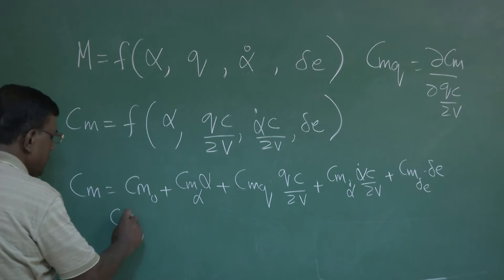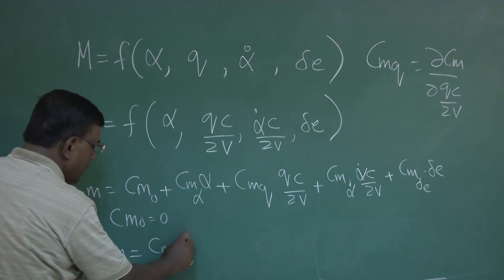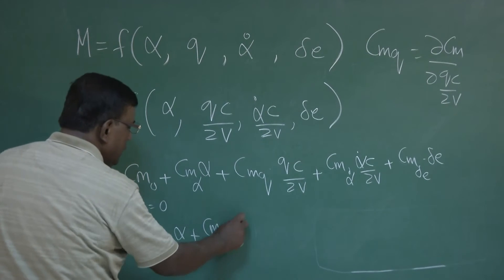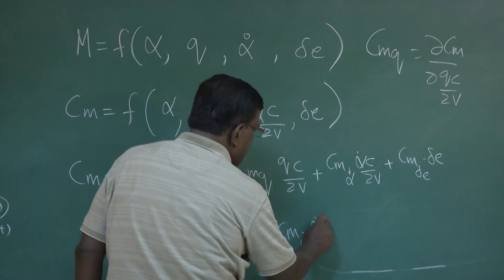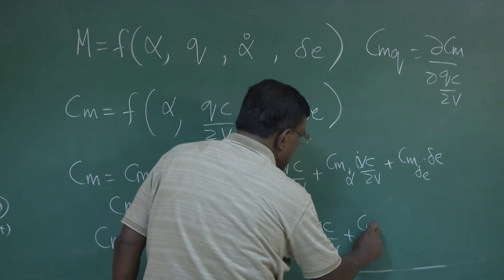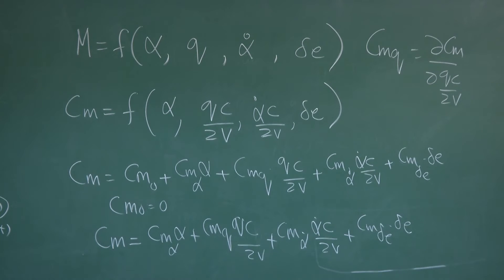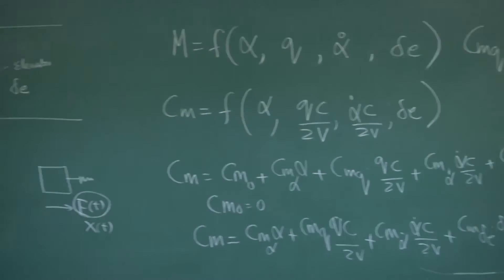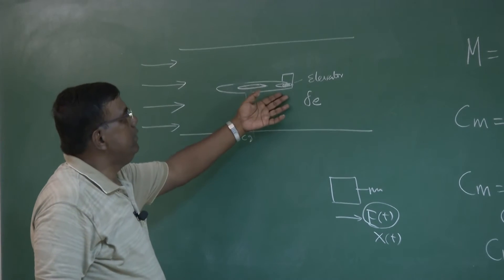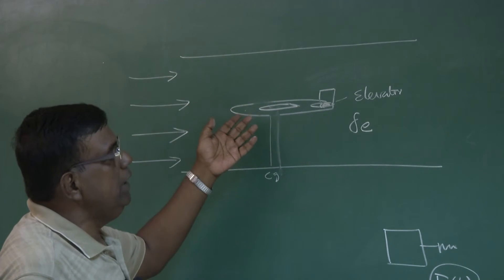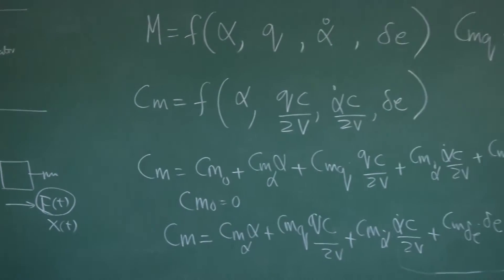Let us take a simplified case where I put Cm_0 equal to 0. Then Cm = Cm_alpha * alpha + Cm_q * (q*c/2v) + Cm_alpha_dot * (alpha_dot * c/2v) + Cm_delta_e * delta_e. If the wing is symmetrical, the tail is symmetrical, the fuselage is symmetrical — everything is symmetrical — then naturally at alpha = 0 there will not be any Cm. So I can always put Cm_0 = 0.